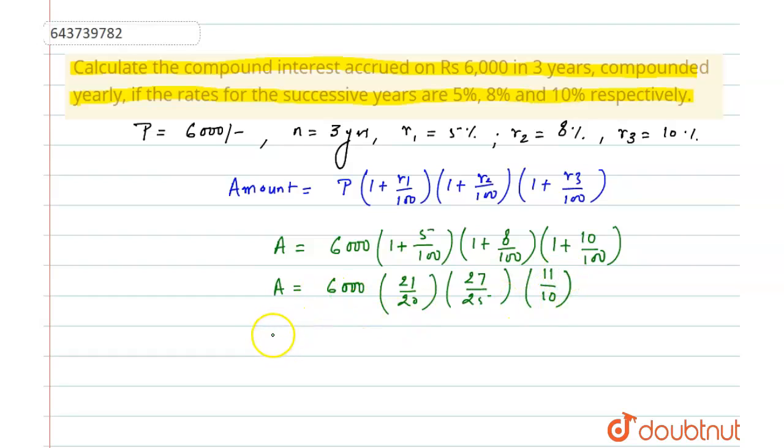So the amount will come as 7,484.40 rupees. This is the amount after three years. Now we need to calculate the compound interest. So we know the compound interest formula is amount minus principal.